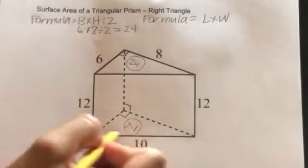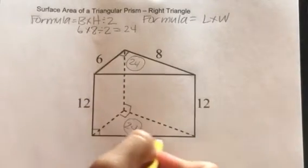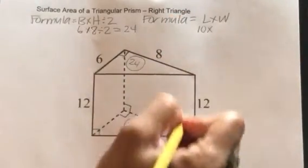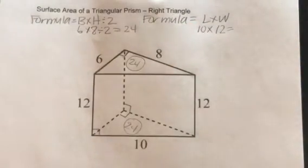So I'm going to first solve for this rectangle that's looking right at us. You can see the length of this particular rectangle is 10, and the width is 12. So I'm going to do 10 times 12, which is 120.